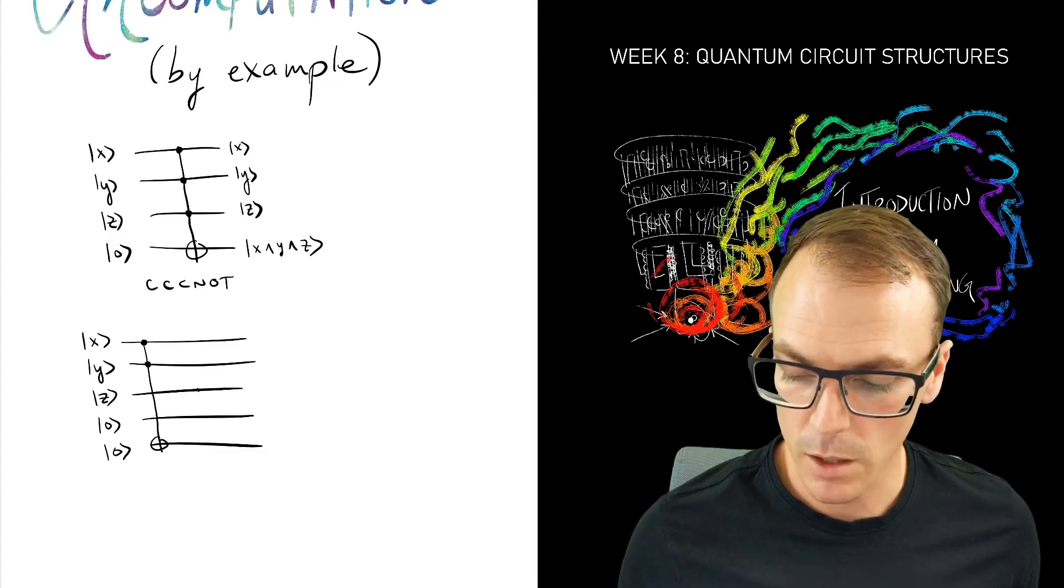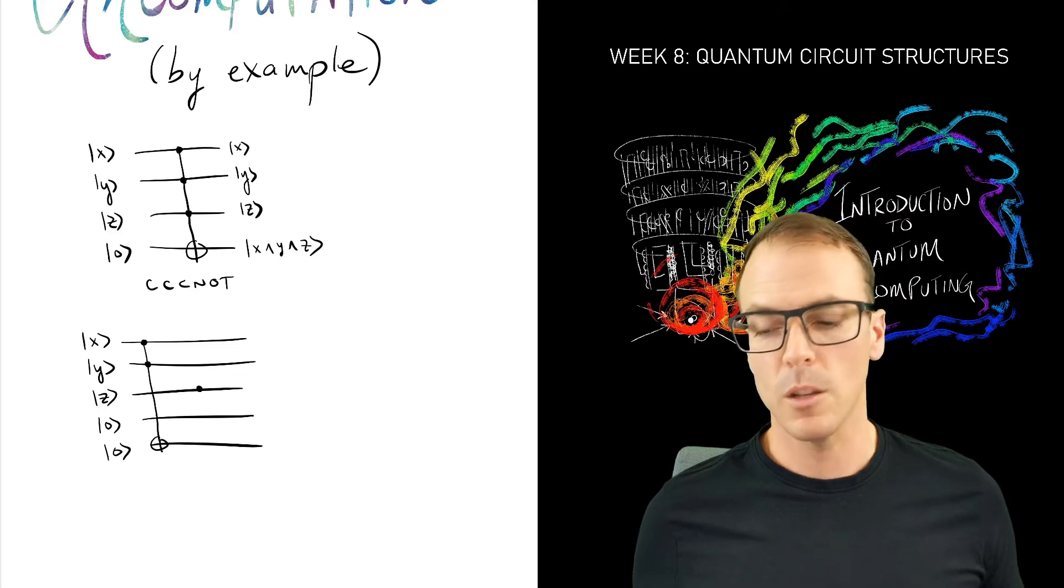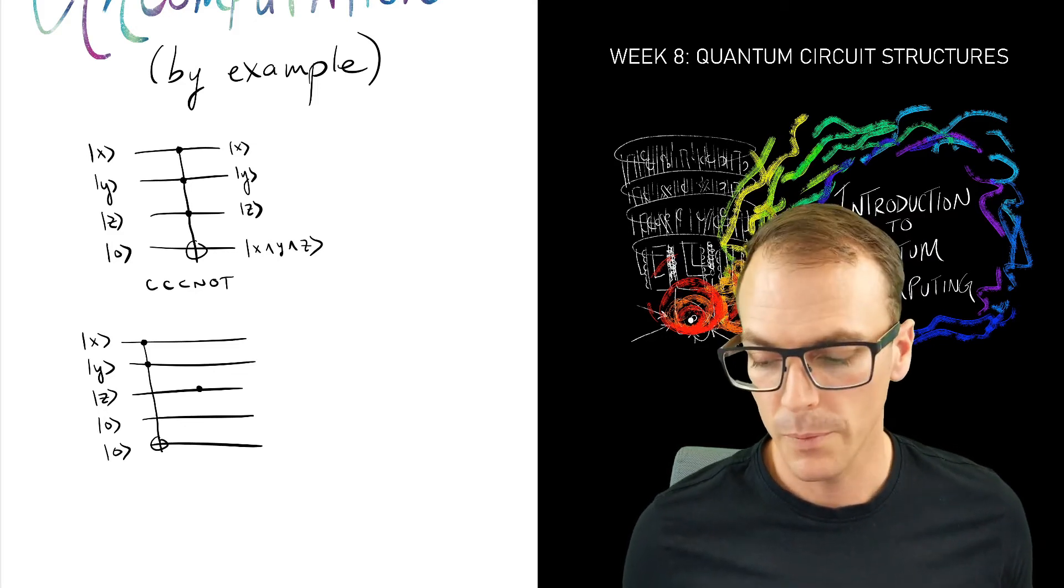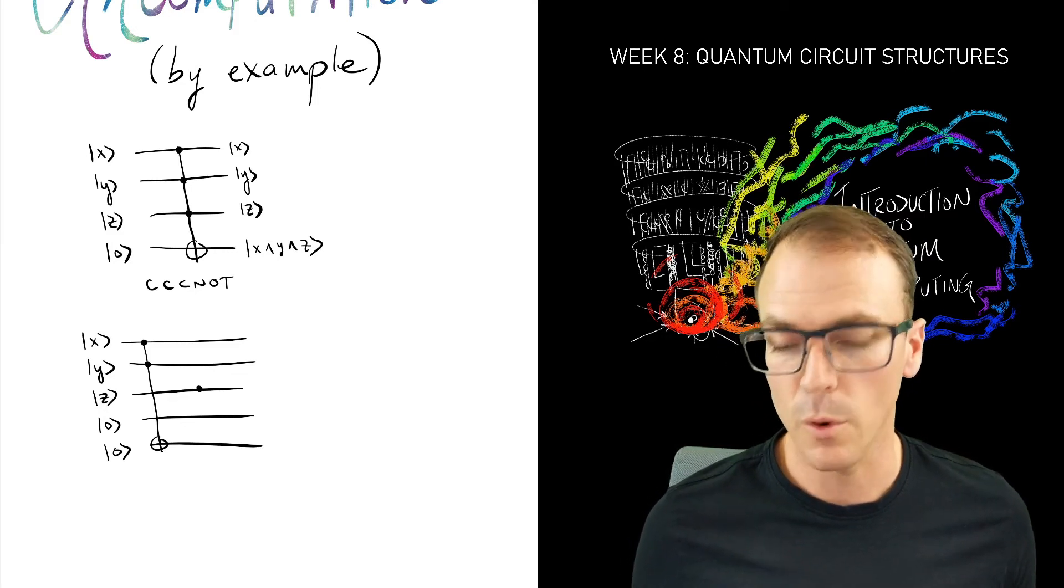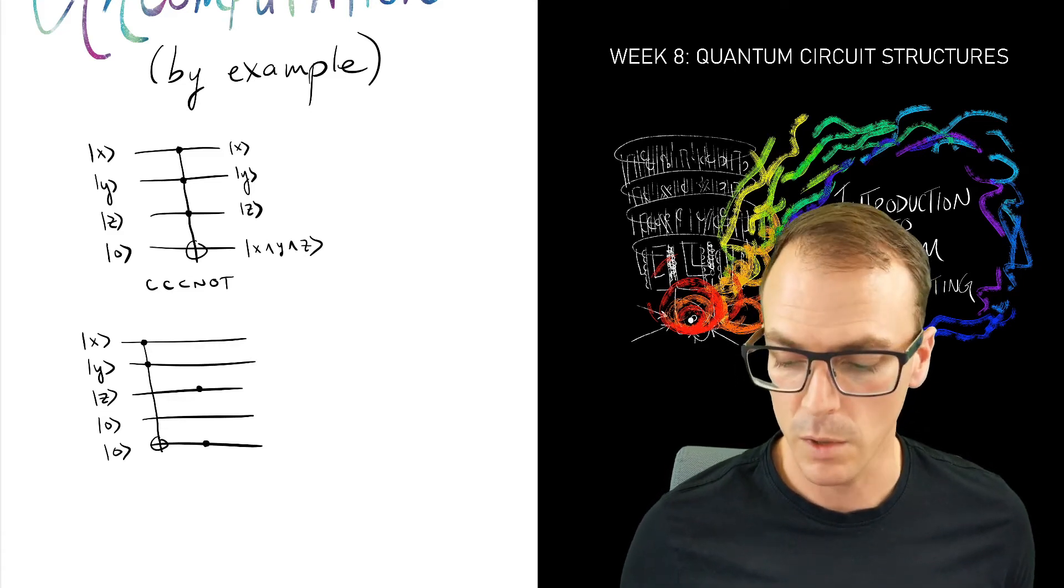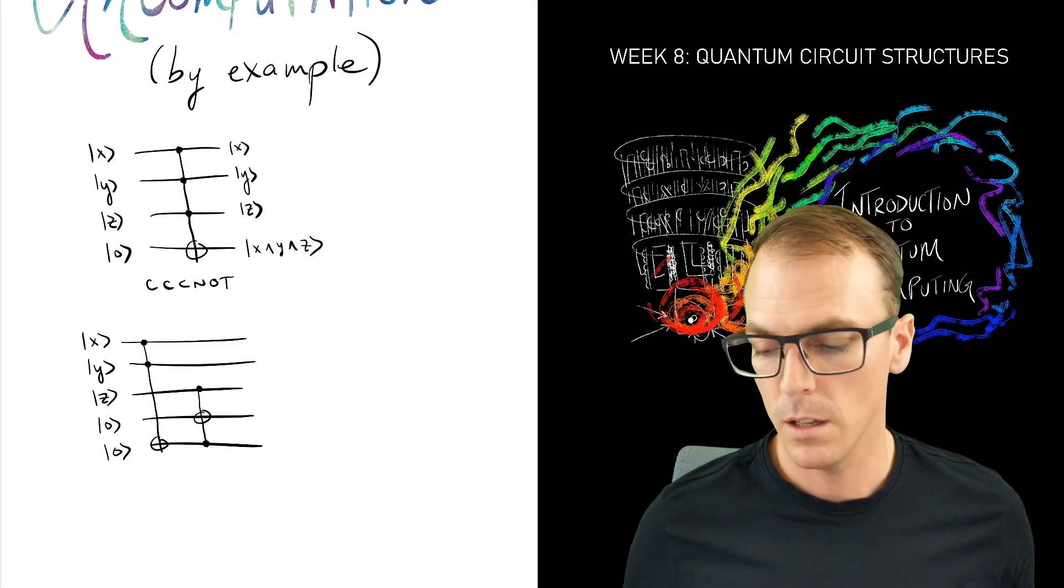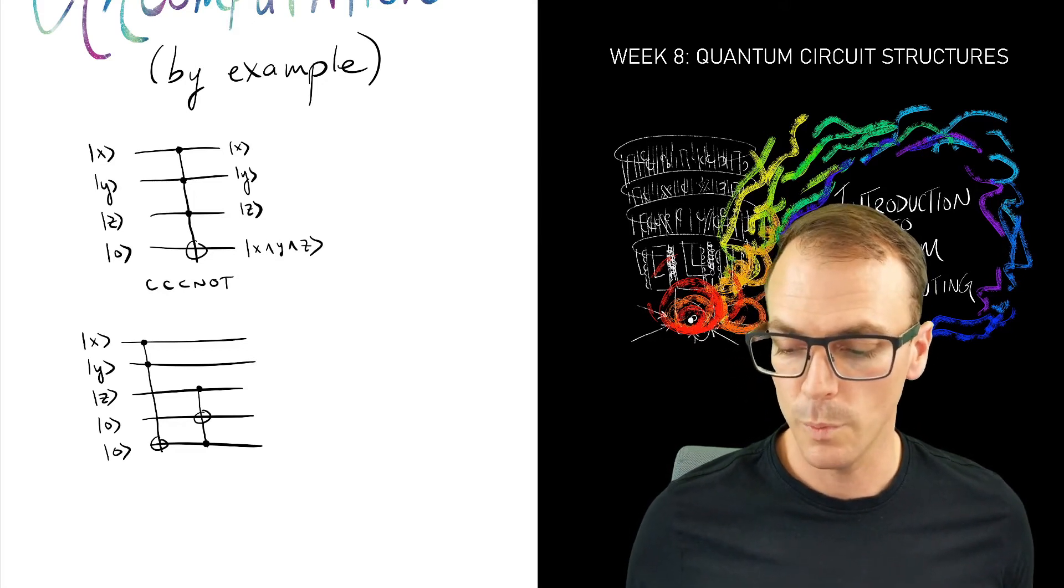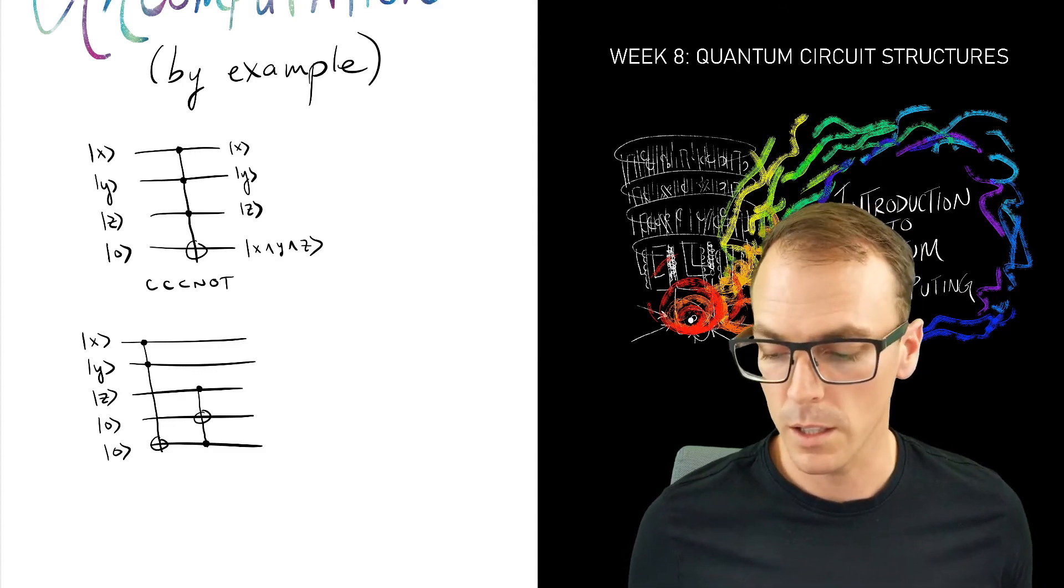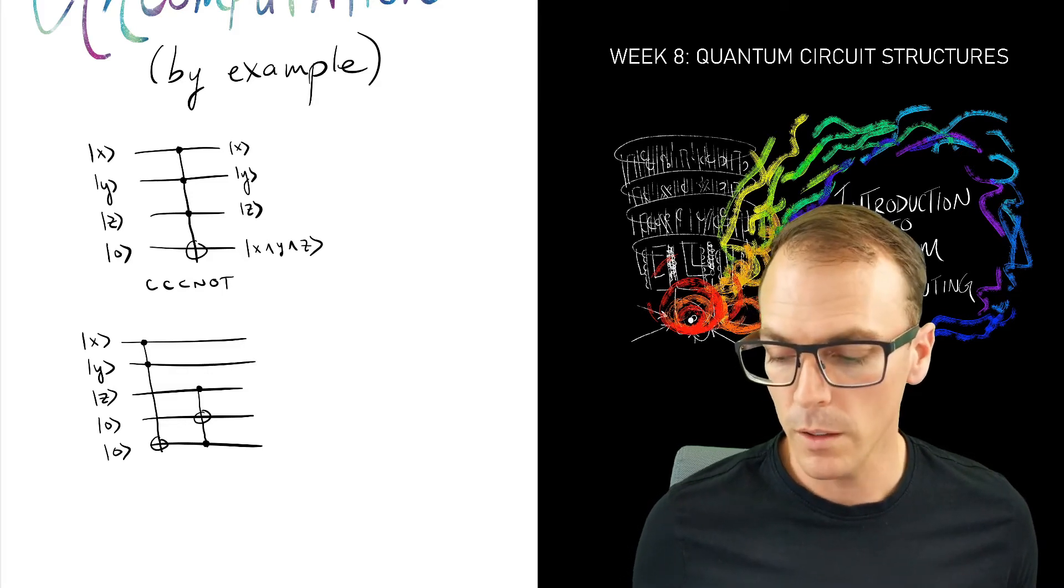And then we want to know if those two are in the one state and Z is in the one state, then we need to flip the qubit in this fourth register. So how do we know if the bottom qubit is in the one state? We control on that one and Z. And this will produce, if X, Y, and Z are one, this will change that second from the bottom qubit to one from zero.